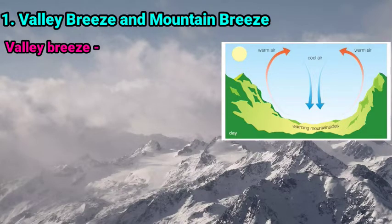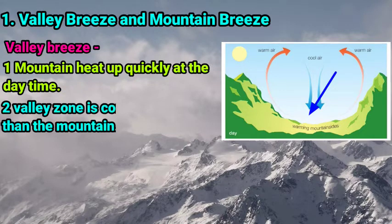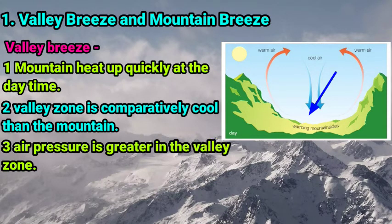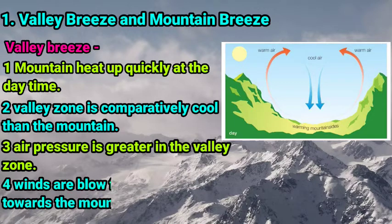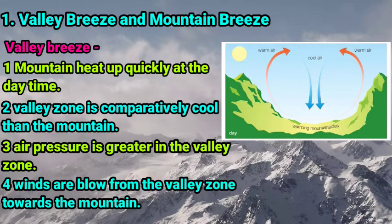Let's see what is the valley breeze. At daytime, mountains heat up quickly. Comparatively, the valley zone is cooler than the mountain. Therefore, the air pressure is greater in the valley zone, and the winds blow from the valley towards the mountain. The hot and light air from the mountain is pushed downward into the valley, and the cool air from the valley rushes upward to the mountain. Due to this situation, valley breeze or valley winds are generated at the mountain areas.